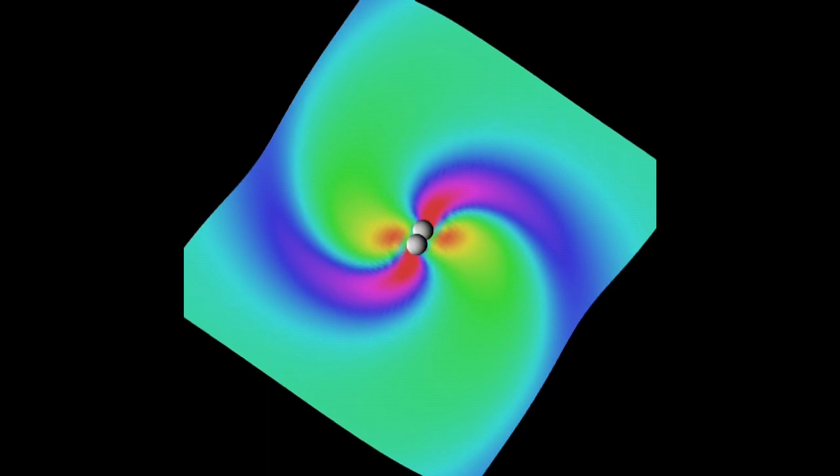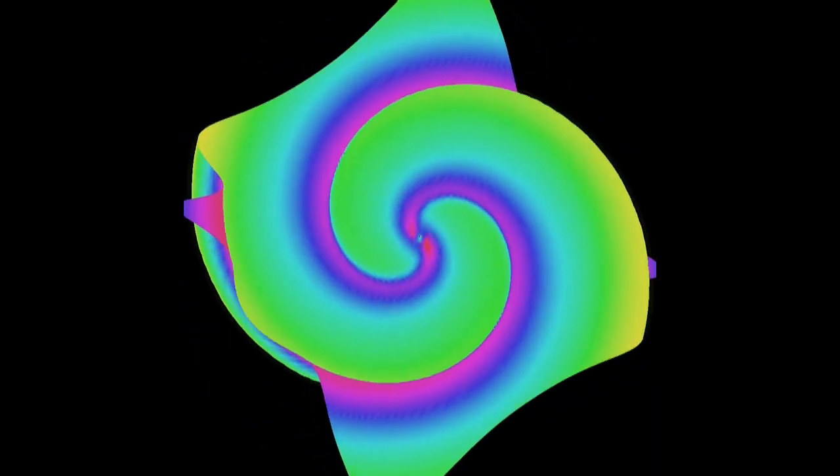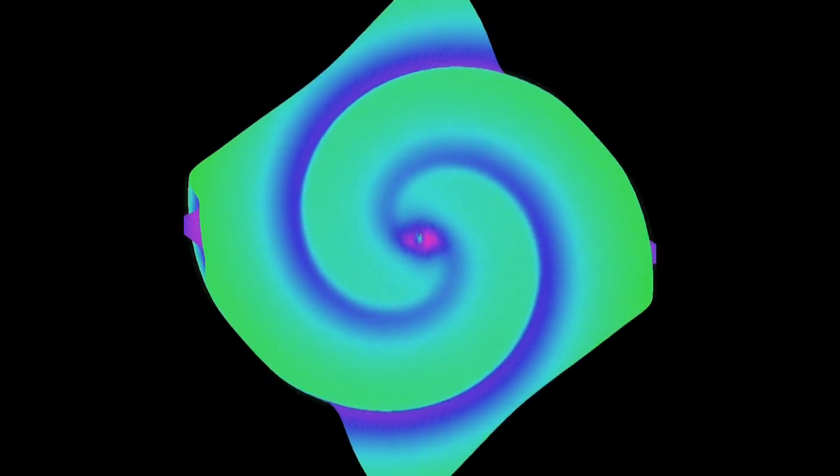The two black holes merge in a spectacular blast of radiation that produces spiral waveforms. This is the most energetic event in the universe.